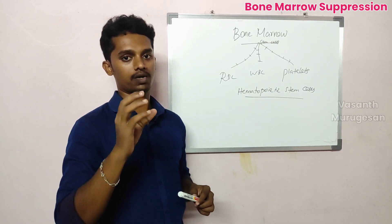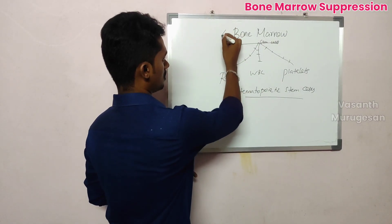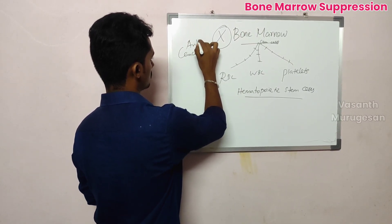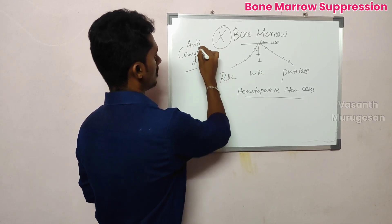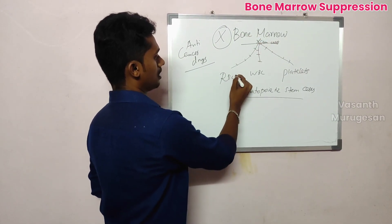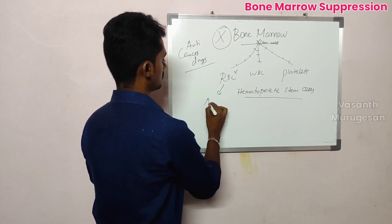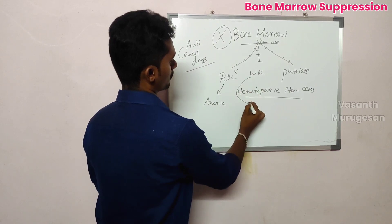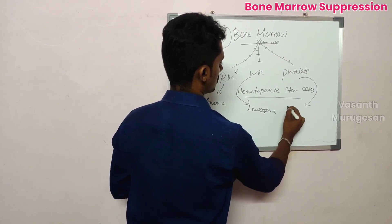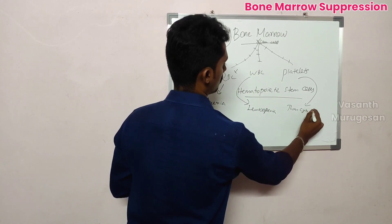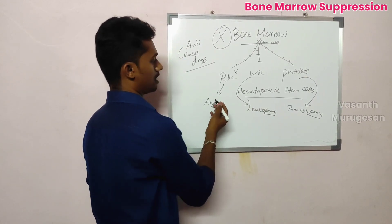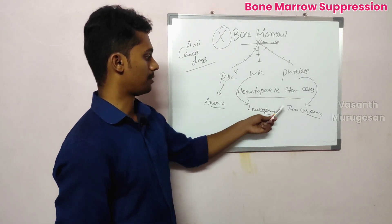What we want to talk about now is bone marrow depression or suppression. For example, anti-cancer drugs suppress the bone marrow. That is why bone marrow function loss leads to: RBC count low, which means anemia; WBC low, which means leukopenia; and platelet low.